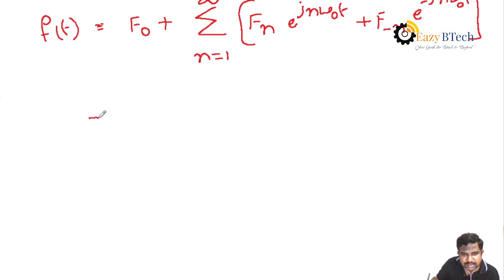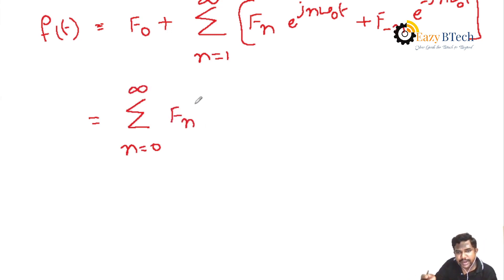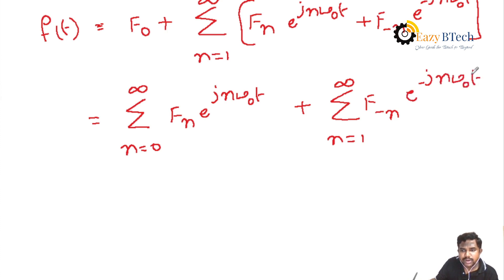The equation becomes: f(t) = F0 + Σ (n=1 to ∞) [Fn·e^(jnω₀t) + F(−n)·e^(−jnω₀t)]. We change the sigma term: the first term with F0 corresponds to n=0 to ∞, and we consider the second term with F(−n) separately for n=1 to ∞.